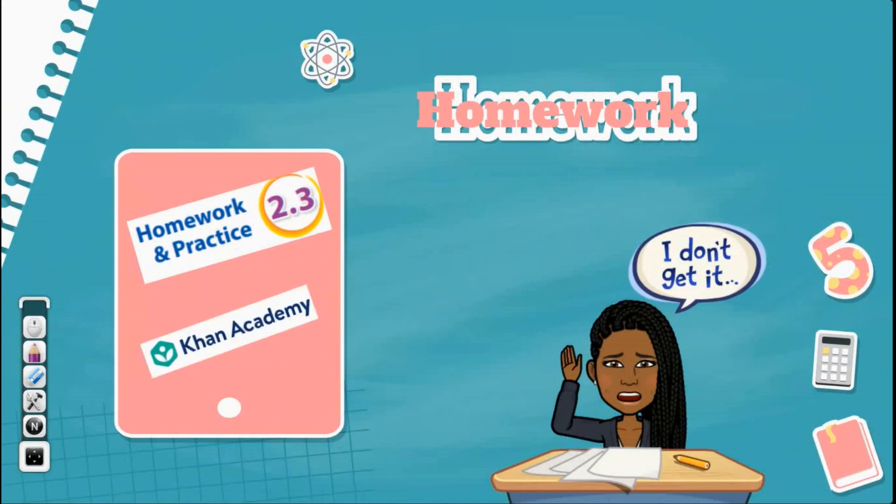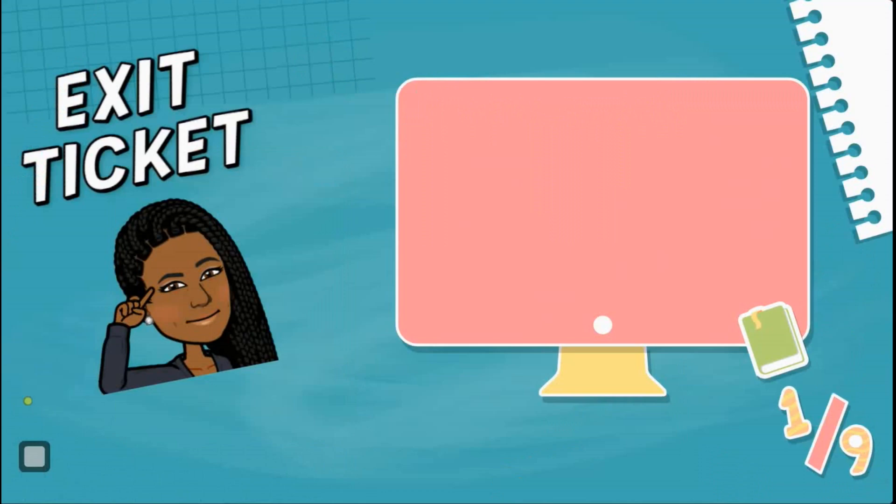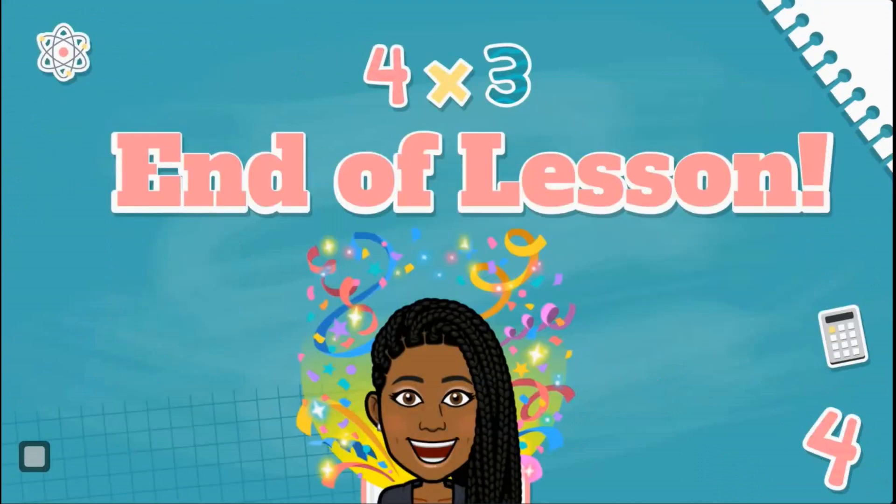Your homework tonight is Chapter 2, Lesson 3 in your Big Ideas Math Textbook. You also have assignments in Khan Academy. If you still have questions at this point, please come and discuss it with me. Or if you're watching this video, please discuss it with your teacher. Your exit ticket today, you'll find this in Mastery Connect. And you made it to the end of the lesson. Have a great day.